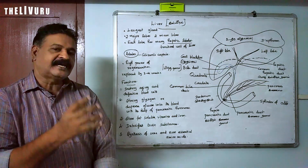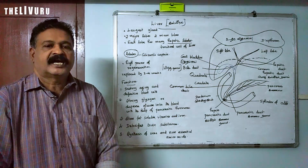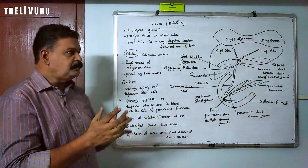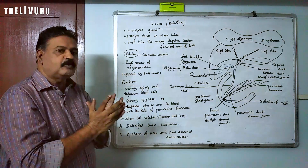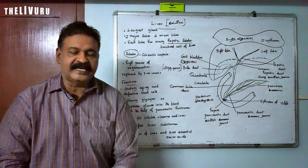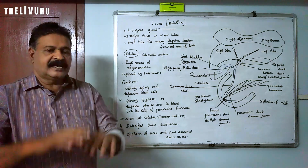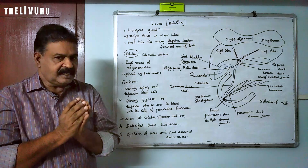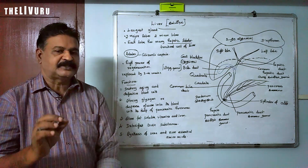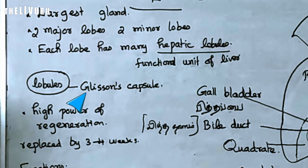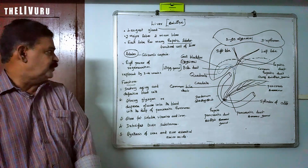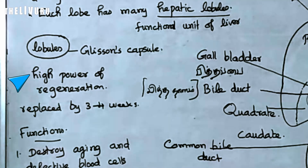These are called hepatic lobules, and hepatic lobules are considered as the functional unit of the liver. All lobules are protected by a covering, and that is called the Glisson's Capsule. In the liver there are many lobules, and each lobule is covered by a capsule called the Glisson's Capsule.